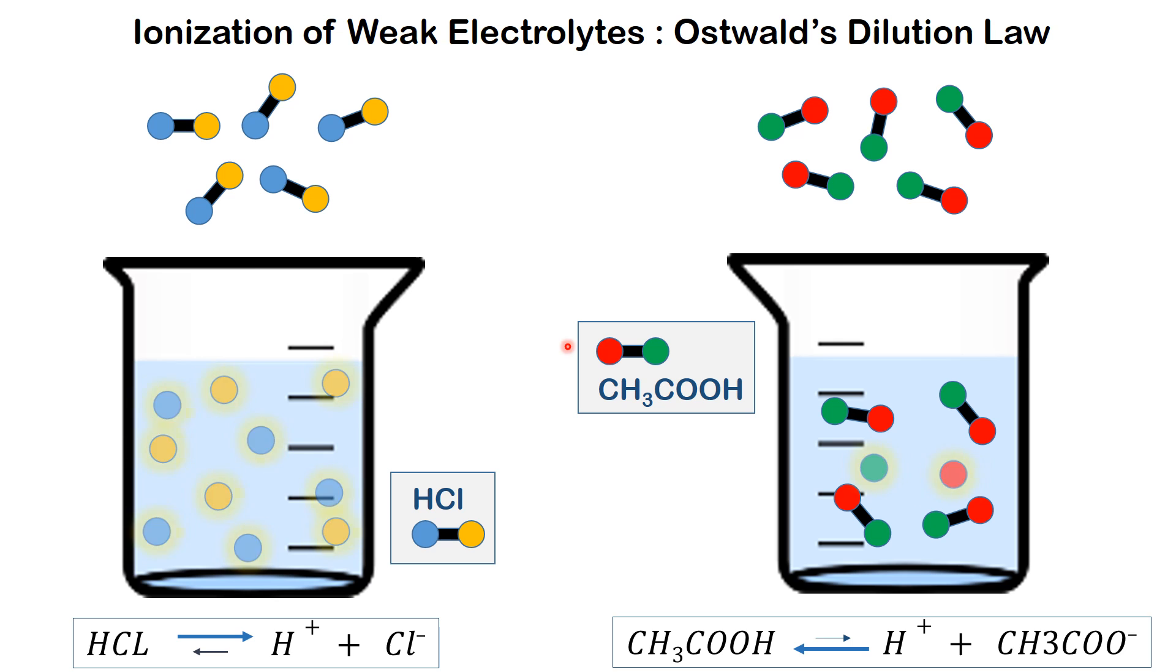When a strong electrolyte like HCl is put in water, nearly the whole of it gets dissociated into H plus and Cl minus ions. Whereas a weak electrolyte like acetic acid is partially dissociated and many of the molecules are undissociated in water.